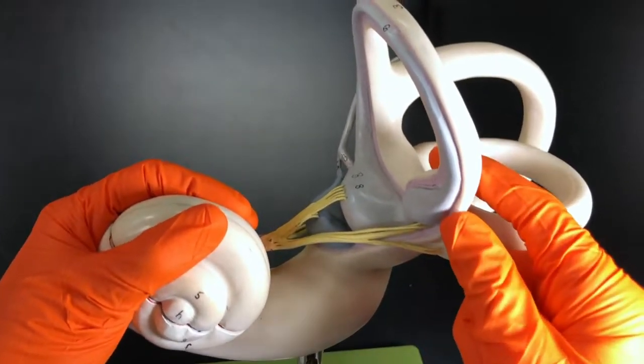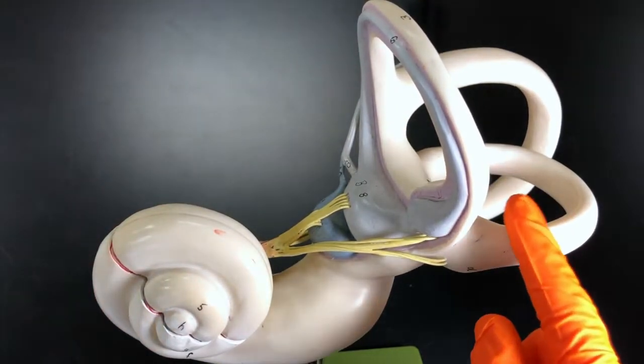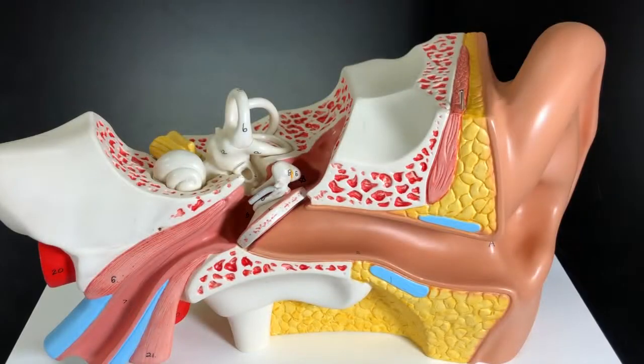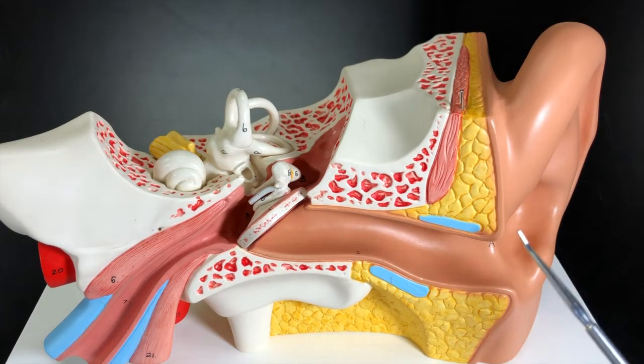All right, so now let's kind of tie these structures in together by following a sound wave. So a sound wave is going to come in, it will pass the pinna, and then go through the external acoustic meatus.